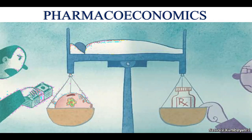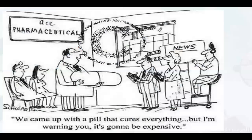Today's topic is pharmacoeconomics. You can see in the image that on one side they are putting money and on the other side they are weighing drugs — so they must balance. A pharmaceutical company says 'we came up with a pill that cures everything, but it's going to be expensive.' So whenever you have to buy a drug, it must be affordable to patients.